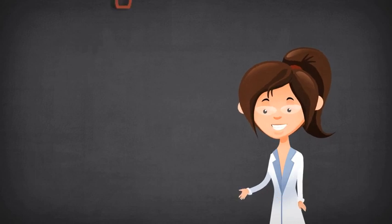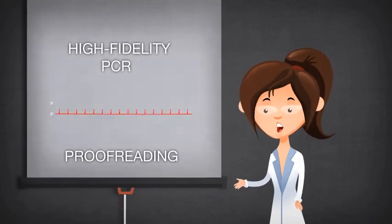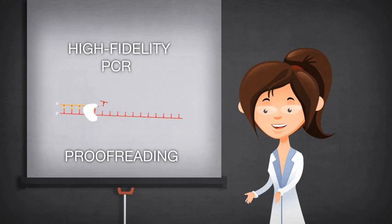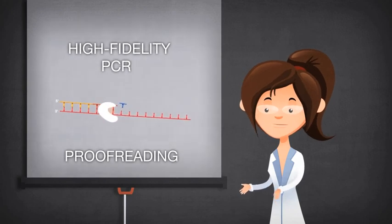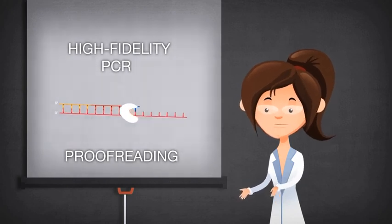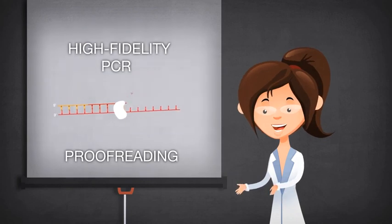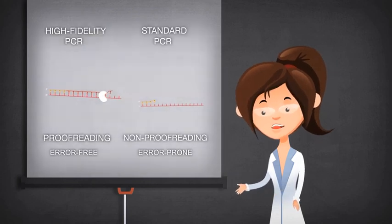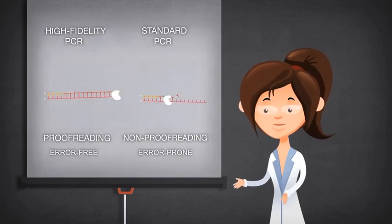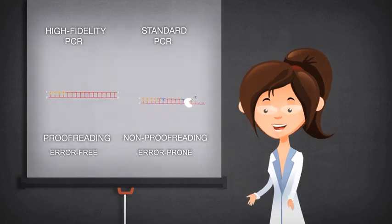Proofreading DNA polymerases are used for high-fidelity PCR because they make fewer mistakes during DNA amplification. DNA polymerases without 3' to 5' exonuclease activity are known as non-proofreading or low-fidelity PCR enzymes. They are mainly used for standard PCR.